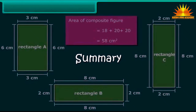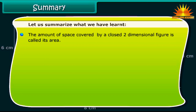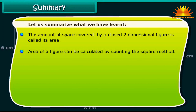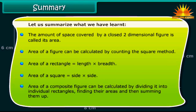Summary. Let us summarize what we have learned. The amount of space covered by a closed two-dimensional figure is called its area. The area of a figure can be calculated by the counting the squares method. The area of a rectangle is equal to length multiplied by breadth. The area of a square is equal to side multiplied by side. The area of a composite figure can be calculated by dividing it into individual rectangles, finding their areas, and then summing them up.